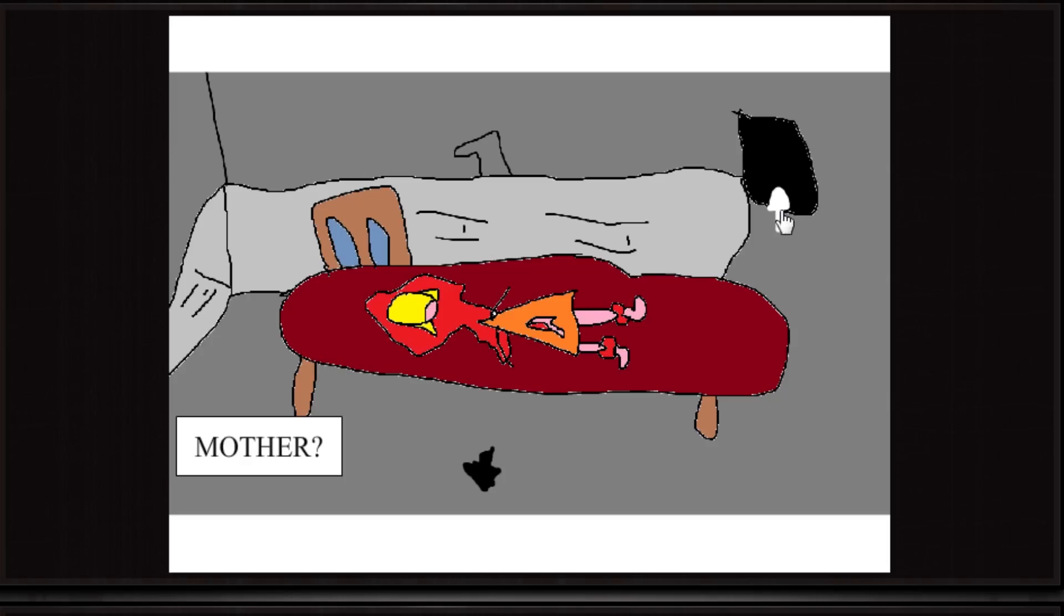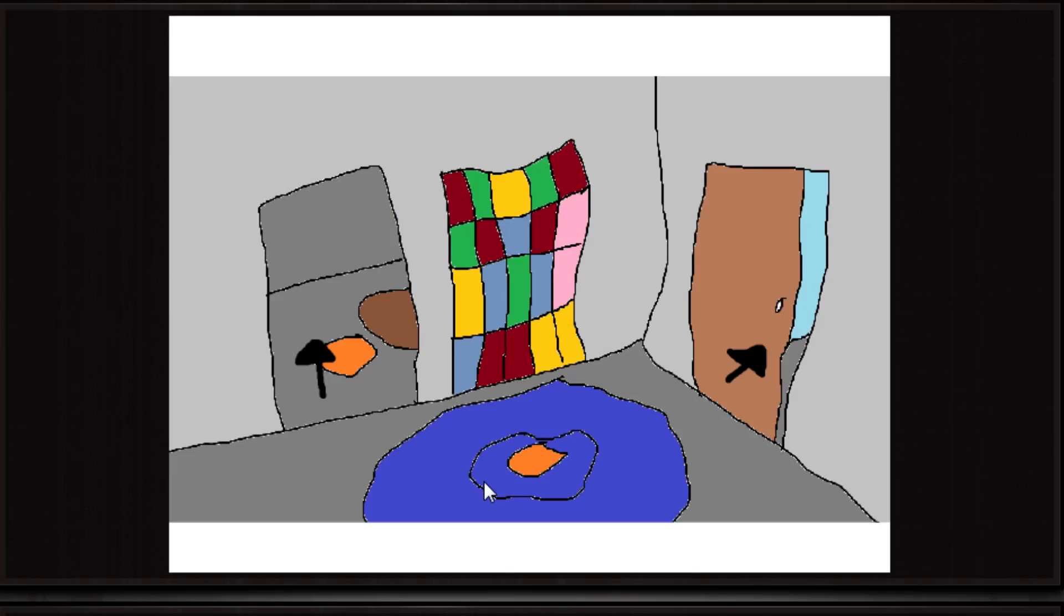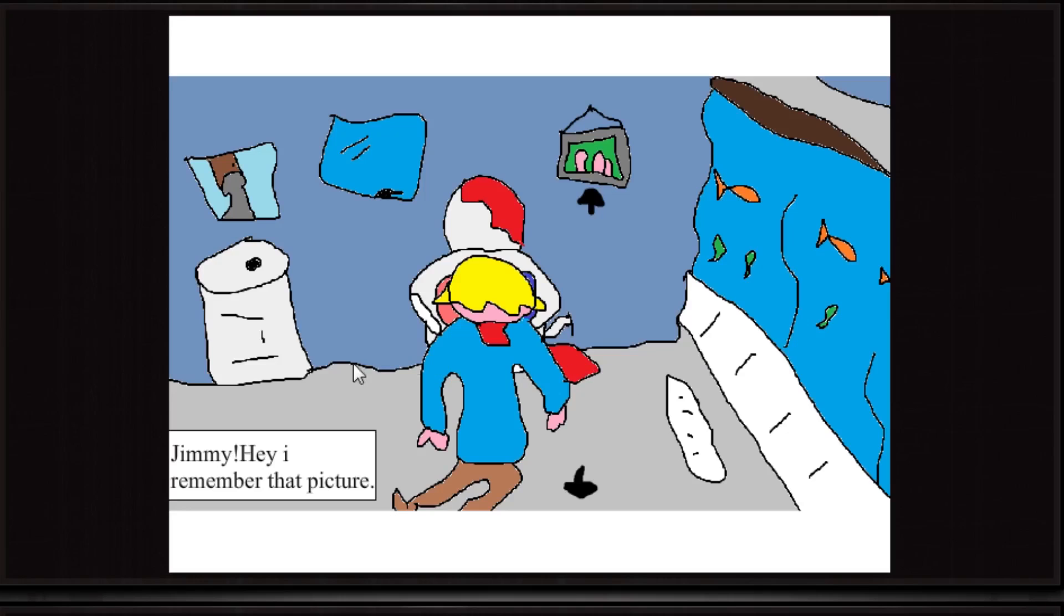Mother? Don't go that way. Why? Use the black arrow first. Go that way. Jimmy, hey, I remember that picture. Is that a toilet? It is! Is that a toilet? That's a toilet. Okay, that's the thumbnail. I'm sorry, am I allowed to go in the picture?